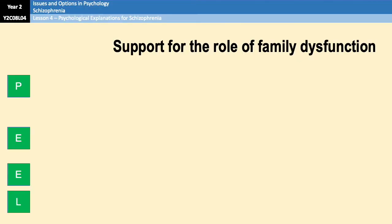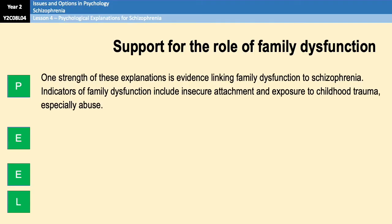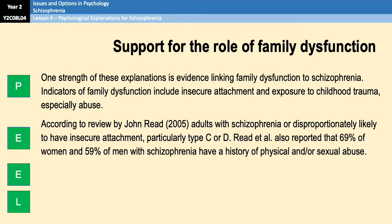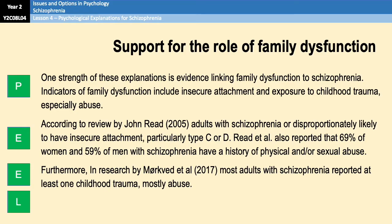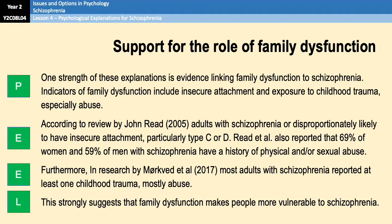We'll start off with a little bit of support for the role of family dysfunction. We have a strength because we have evidence that links family dysfunction to schizophrenia. Family dysfunction includes things like insecure attachment and exposure to childhood trauma, particularly abuse. Research by Reid from 2005 showed that adults with schizophrenia are disproportionately likely to have insecure attachments. Reid also reported that 69% of women and 59% of men with schizophrenia have a history of physical and/or sexual abuse. You've also got research by Merckved et al. from 2017 that showed that most adults with schizophrenia reported at least one childhood trauma. So there's a lot of evidence for the role of family dysfunction.